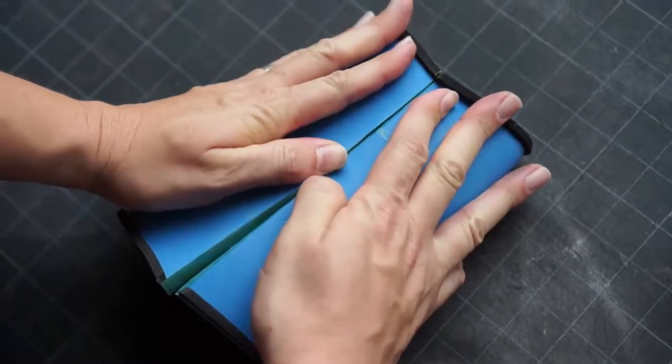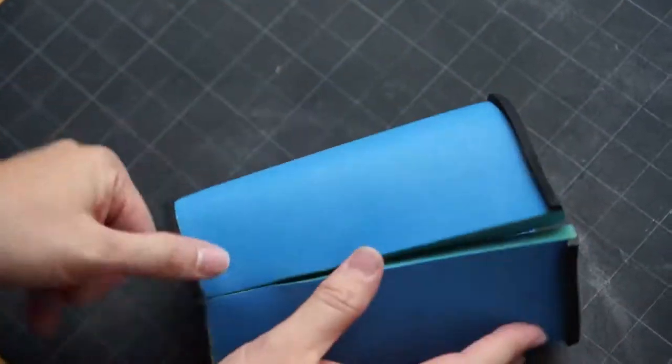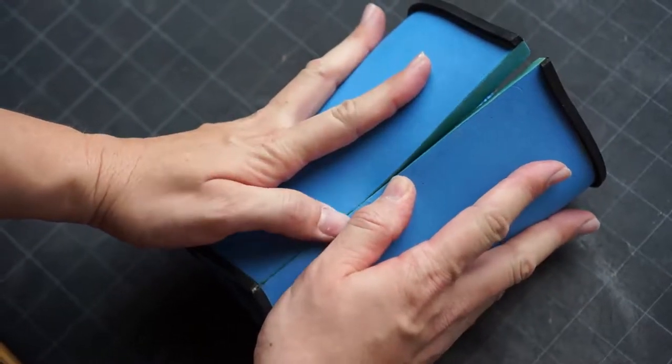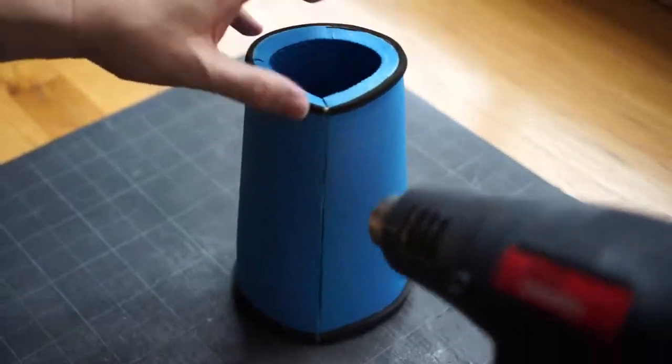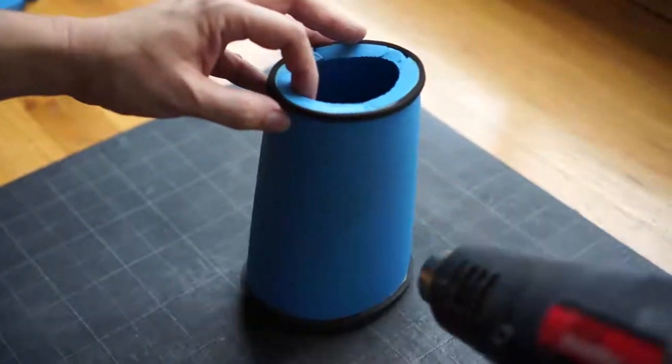Apply contact cement along the seam where the bracer will come together. Once it is dry line up and press it together. Once glued together use your heat gun to heat up the foam and mold them into a rounder shape.